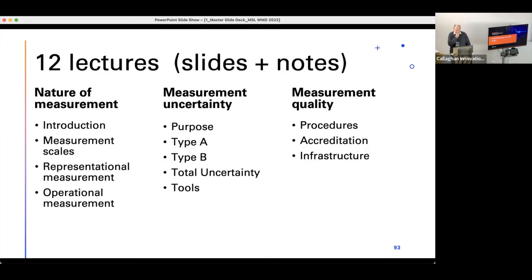These are the contents of the lectures. You can see there are 12 lectures. The first four are on the nature of measurement. The first one is really just an introduction that opens people's eyes to just how complicated measurements can get when you start involving other people. There's a lesson on measurement scales. We talk about representational measurements. These are the ones where you do have mathematical models and can do uncertainty analysis and so on. We also talk about operational measurements. These are the ones where the measure ends are defined by procedure.